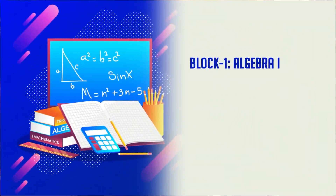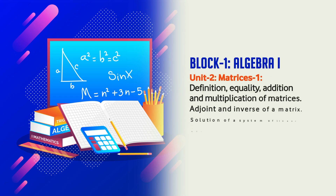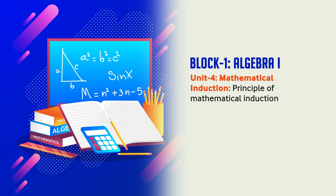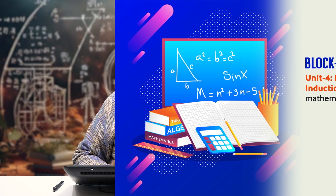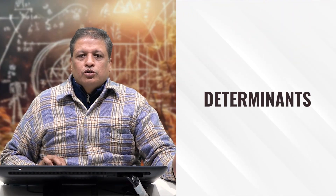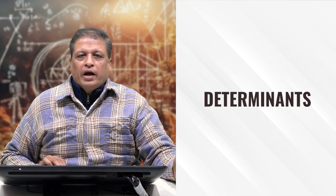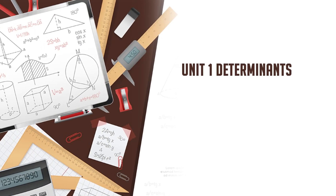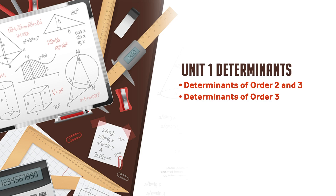Block 1 relates to Algebra 1. In Algebra 1 we are having four units: Unit 1 is determinants, Unit 2 is matrices, Unit 3 is again matrices — a second part of the matrices — and in Unit 4 we will be discussing about mathematical induction. We will be discussing firstly what is determinants. Determinants are actually scalar components, and Unit 1 discusses about determinants of order 2 and order 3, along with properties and applications of determinants.